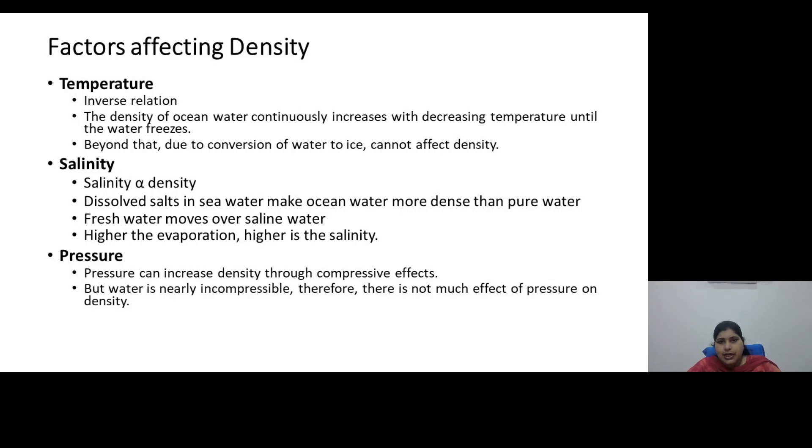Further if we come to salinity, the salinity of ocean water is directly proportional to its density. So this density is affected by salinity because we have more of solutes that are dissolved in ocean water compared to the fresh water. So this dense water or this ocean water is heavier than fresh water and the fresh water would float over this dense water. And this salinity is also affected by temperature. So if we have higher evaporation that means the salinity would be more and accordingly the density of ocean water would be more.